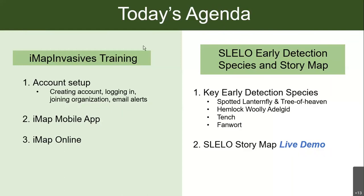Today's agenda: first, I'm going to give an IMAP basics training — teaching you how to set up your account and use the mobile app. Then Meg is going to talk about some key species to be looking out for in the SLILO region, and she'll give a live demo of a really cool story map she's created to help you figure out what species to look for, where some good spots are to look for them, and resources on how to identify the species.